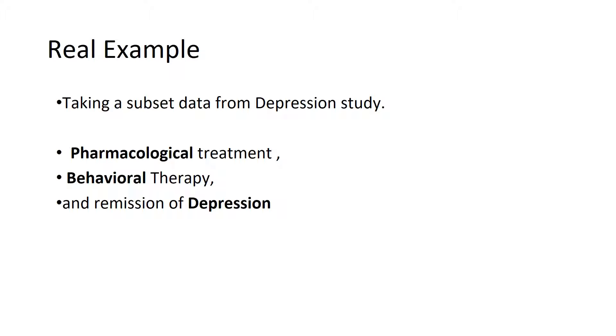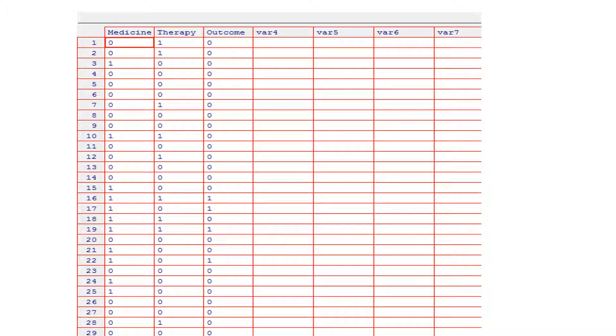Let's have a real example to make mediation analysis a little bit easier or more practical. Here is a real example for a depression study where pharmacological treatment is the exposure, behavioral therapy is the mediator, and success of depression treatment is the outcome. Here is the data. As we can see, all values must be in discrete type of data, or what can be called zeros and ones.